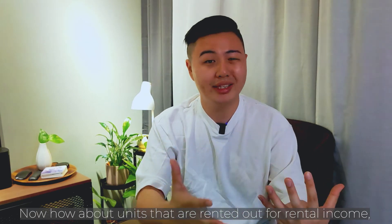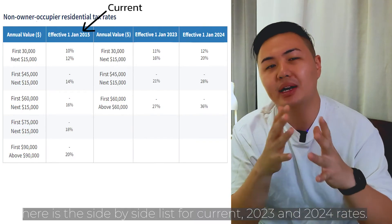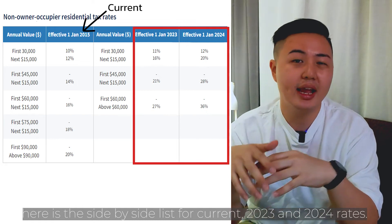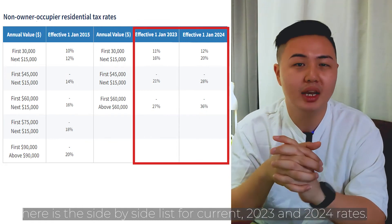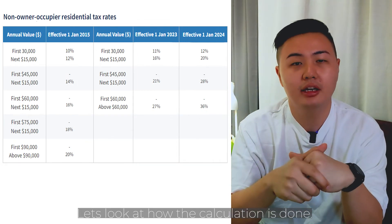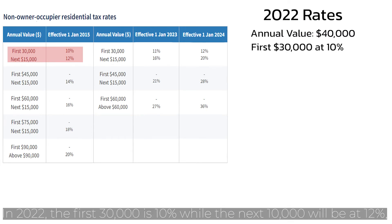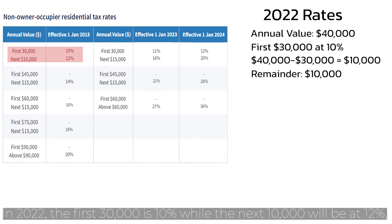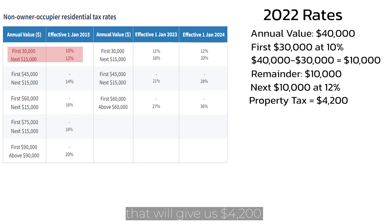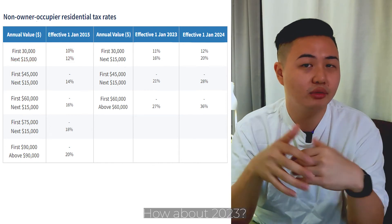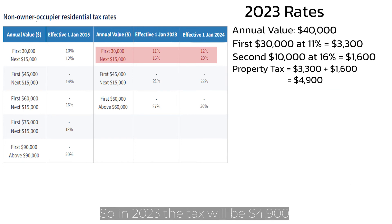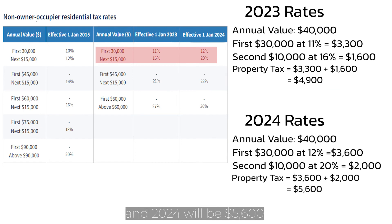How about units that are rented out for rental income? Here's a side-by-side comparison of the current 2022, 2023 and 2024 rates. Assuming the same annual value of $40,000: in 2022, the first $30,000 is at 10% and the next $10,000 at 12%, giving a total of $4,200. In 2023 the tax will be $4,900, and in 2024 it will be $5,600 — that's an increase of $1,400 from 2022.